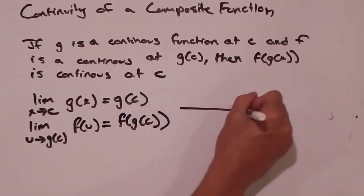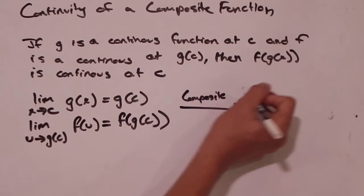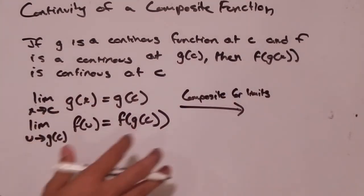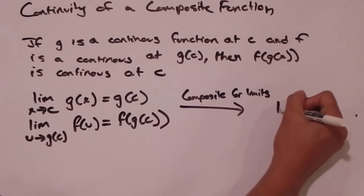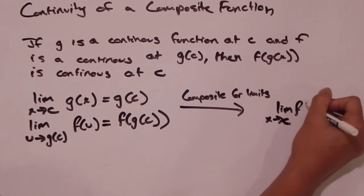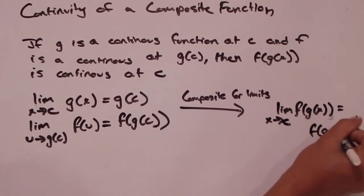Well now if we just apply our composite property for limits, we very easily see that the limit as x goes to c of f(g(x)) is equal to f(g(c)).